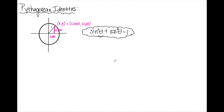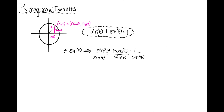From there, there are two other Pythagorean identities we need to know. The first one I get by dividing the entire equation sin²θ + cos²θ = 1 by sin²θ. Sin²θ divided by sin²θ is 1, cos²θ divided by sin²θ is cot²θ, and 1 over sin²θ is csc²θ. So: 1 + cot²θ = csc²θ. That's the second Pythagorean identity.